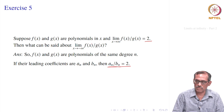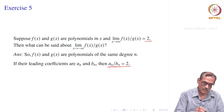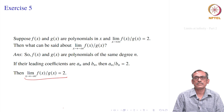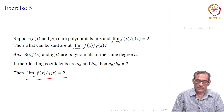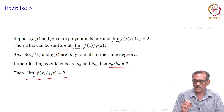What can we say about x goes to minus infinity of f(x)/g(x)? The same thing happens: when x goes to minus infinity, after dividing by xⁿ all terms go to 0 except the leading terms, leaving aₙ/bₙ, which is again equal to 2. Alternatively, substitute x with minus x: the factors of (minus 1)ⁿ appear in both numerator and denominator and cancel, again giving aₙ/bₙ equal to 2.